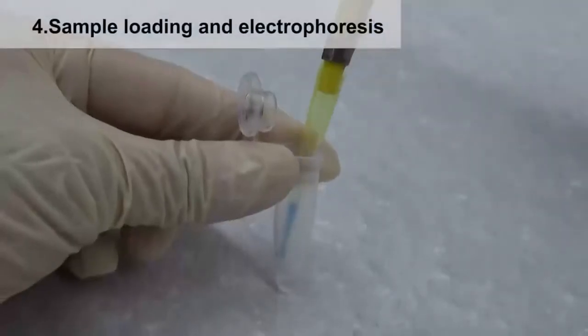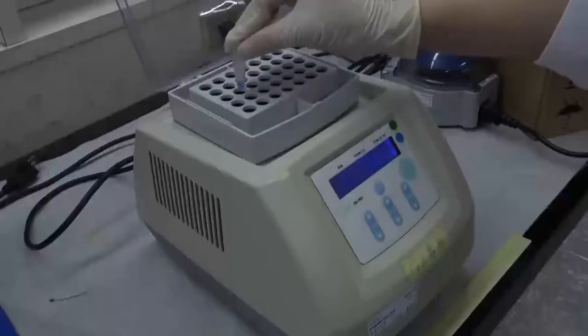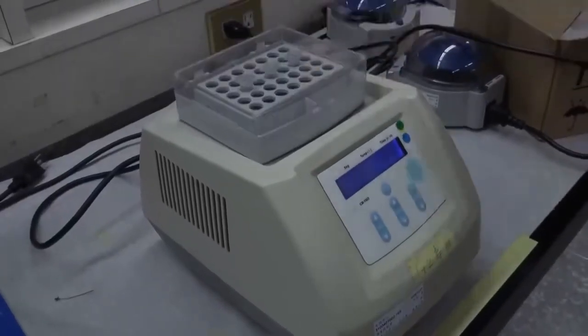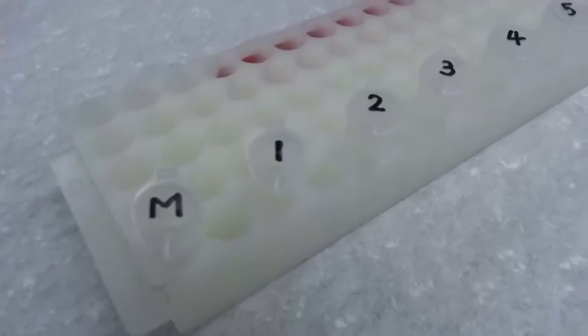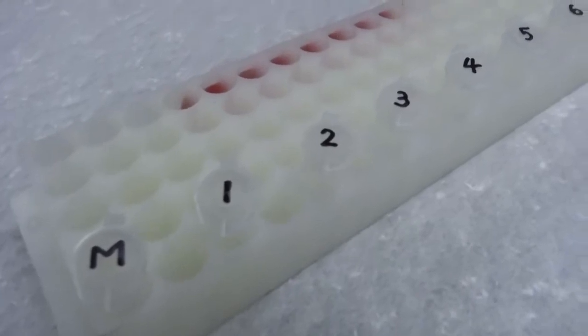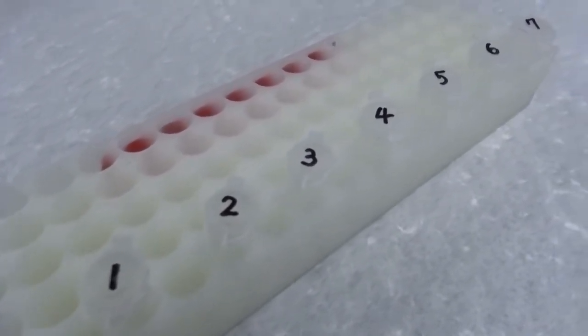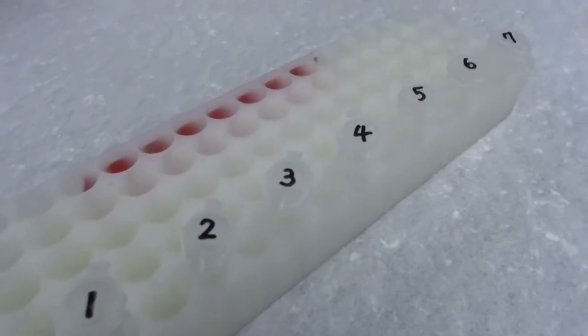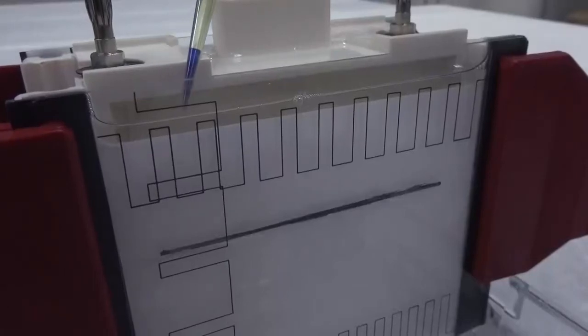Add samples into the sample buffer which contains a tracking dye. Heat the sample mixture at the specified temperature for certain time as instructed. Check the loading order. The molecular weight marker is usually loaded first, followed by sample 1, sample 2, sample 3, and so on.